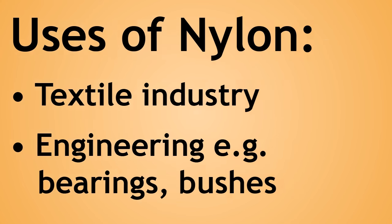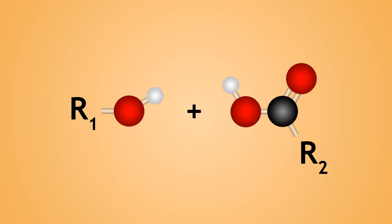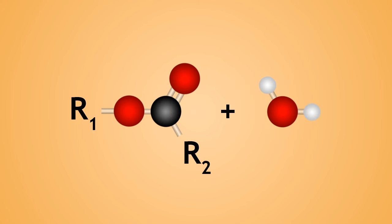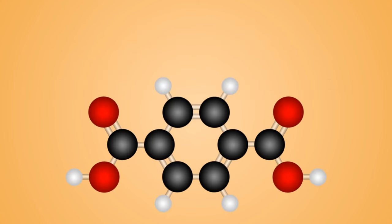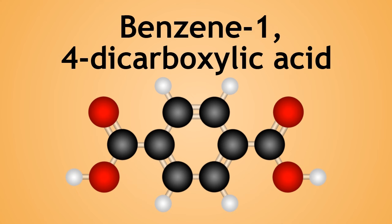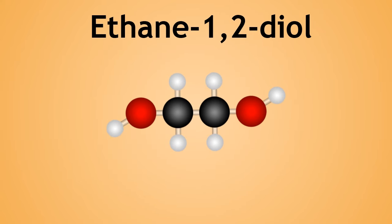We can now look at polyesters in a similar way. An ester is formed in the reaction of an alcohol with a carboxylic acid. In this example, we will show the formation of polyethylene terephthalate, more commonly known as PET, using the carboxylic acid benzene-1,4-dicarboxylic acid and the alcohol ethane-1,2-diol.